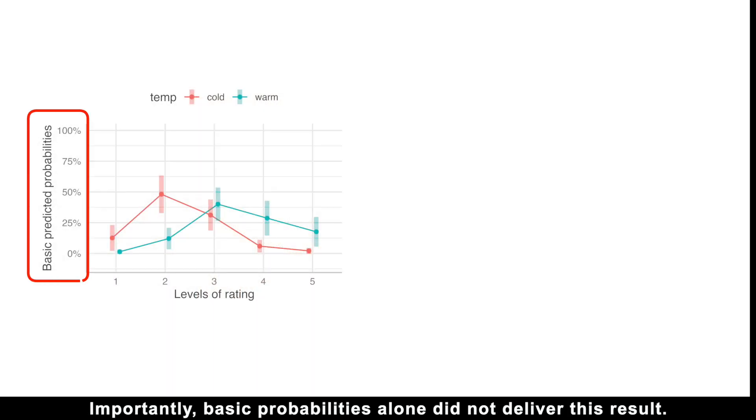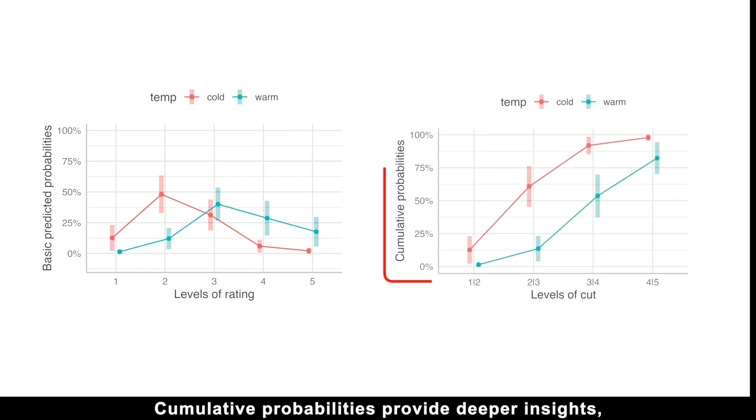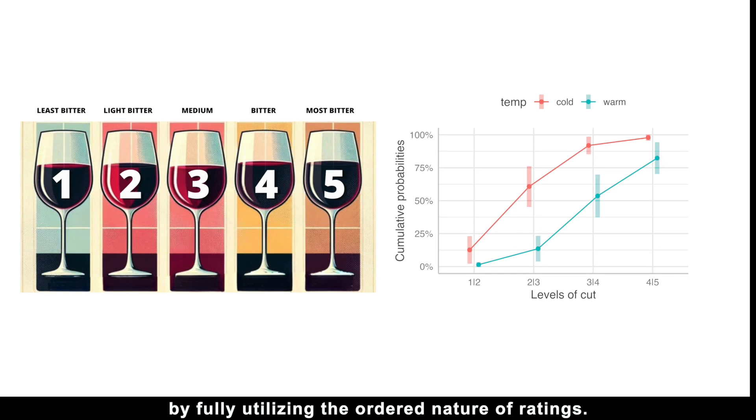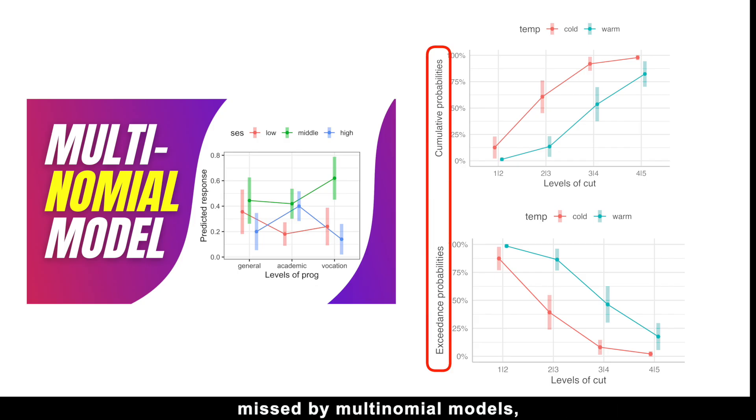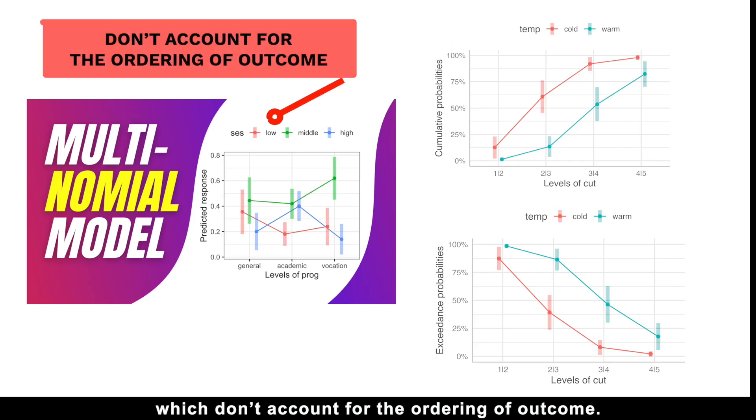Importantly, basic probabilities alone did not deliver this result. Cumulative probabilities provide deeper insights by fully utilizing the ordered nature of ratings. This advantage highlights why ordinal models can uncover information missed by multinomial models, which don't account for the ordering of outcome.